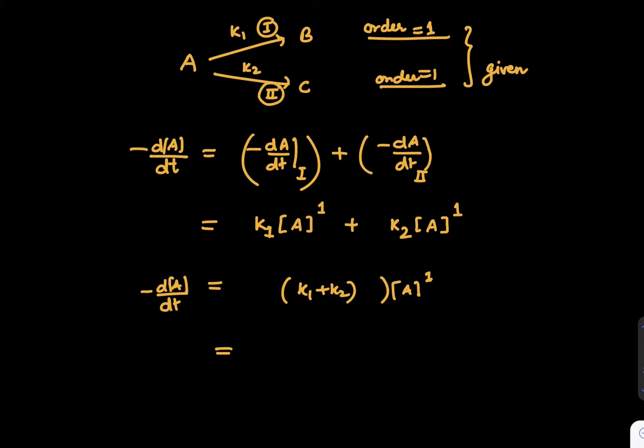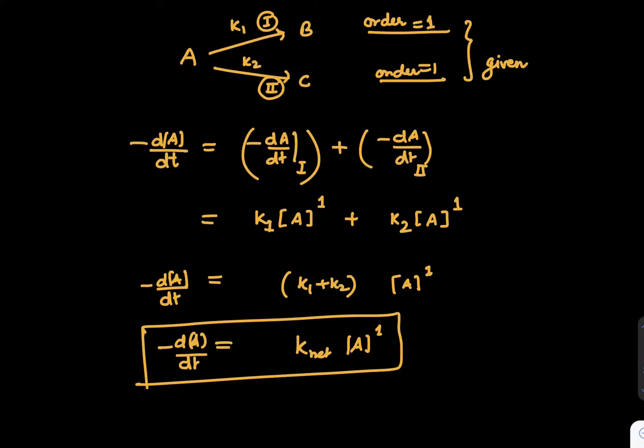Can we say that we find some kind of similarity in this situation, which is that k1 plus k2 into A power 1 is something like k_net times A power 1, which is minus dA by dt. And this result is the result of first order reaction, which we have used earlier. Minus dA by dt is k times A.